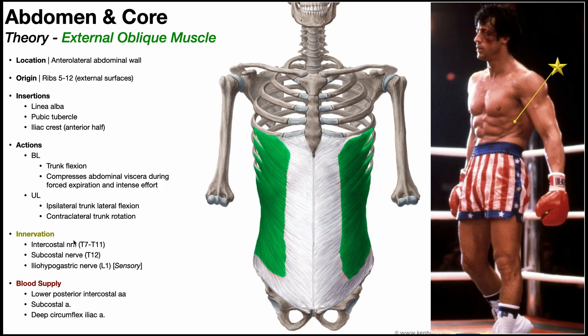These are the motor contributions to the external oblique muscle — getting the muscle to contract. But this muscle also has sensory innervation via the iliohypogastric nerve, one of the nerves from the lumbar plexus, which is sensory only with a nerve root contribution from L1. The blood supply to the external oblique is via the lower posterior intercostal arteries, the subcostal artery, and the deep circumflex iliac artery.